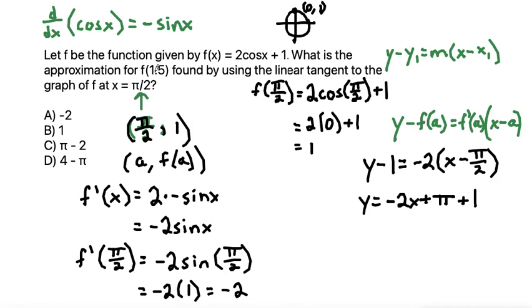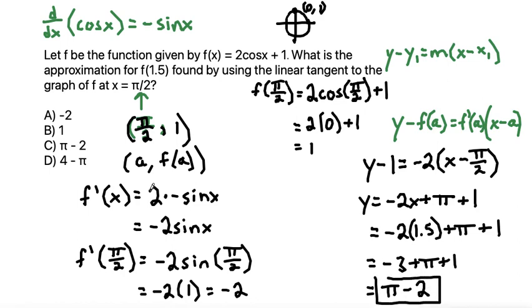Since we're looking for f of 1.5, that means we're plugging in 1.5 into our linearization formula for x. So plugging that in is negative 2 times 1.5 plus pi plus 1. Simplifying, negative 2 times 1.5 makes negative 3. Bring down the plus pi plus 1, and combine like terms. Negative 3 plus 1 is negative 2, so that would be pi minus 2, which is our final answer, or letter C.